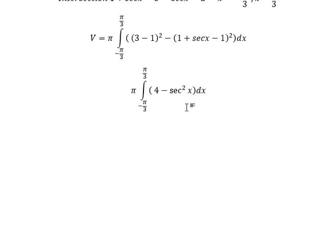And now we can get the final answer. The integral of 4 is about 4x. The integral of secant of x square you got about tan x. And we have π over 3 and negative π over 3.